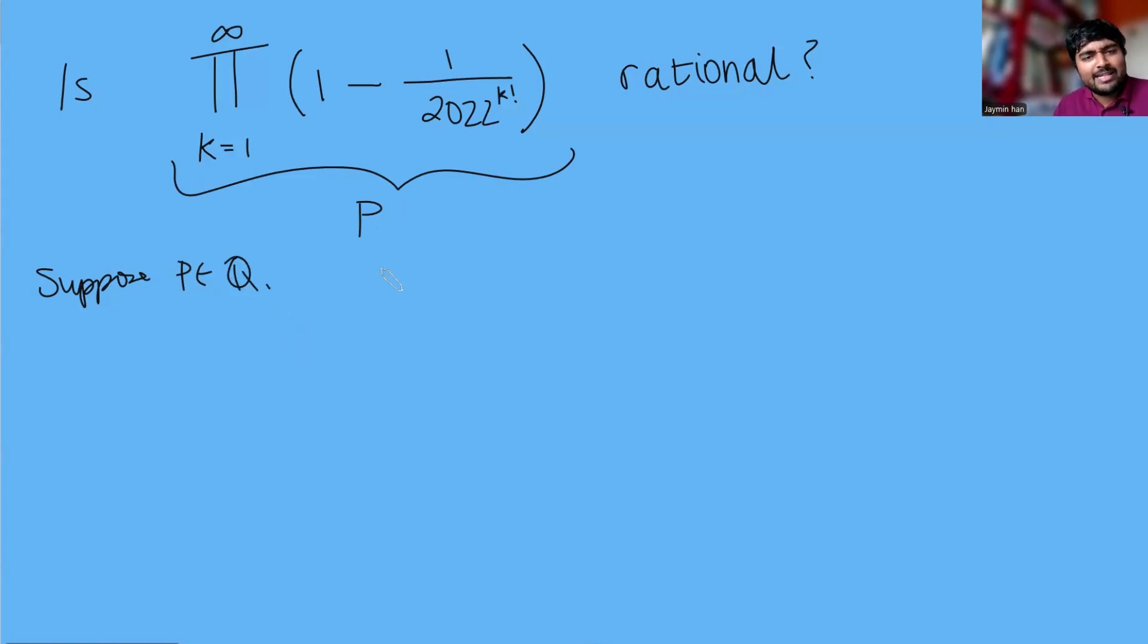First things first, let's just write out what exactly P is. It's this big product here, so 1 minus 1 over 2022 to the 1 factorial times 1 minus 1 over 2022 to the 2 factorial times 1 minus 1 over 2022 to the 3 factorial and so on forever. In theory you could expand out this bracket. If I chose to I could just choose all the ones from each bracket and if I multiply that all out that's just going to give me 1.